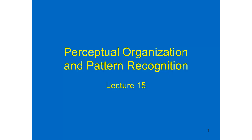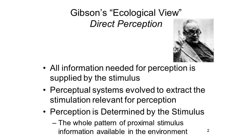Lecture 15: Perceptual Organization and Pattern Recognition. Gibson's ecological view of direct perception assumes that all the information needed for perception is present in the stimulus itself, the stimulus being broadly construed. What happens in perception is that the perceptual apparatus extracts this information. This means that perception is determined by the stimulus — the whole pattern of proximal stimulus information available to the observer. It's a very straightforward, very appealing view of perception.